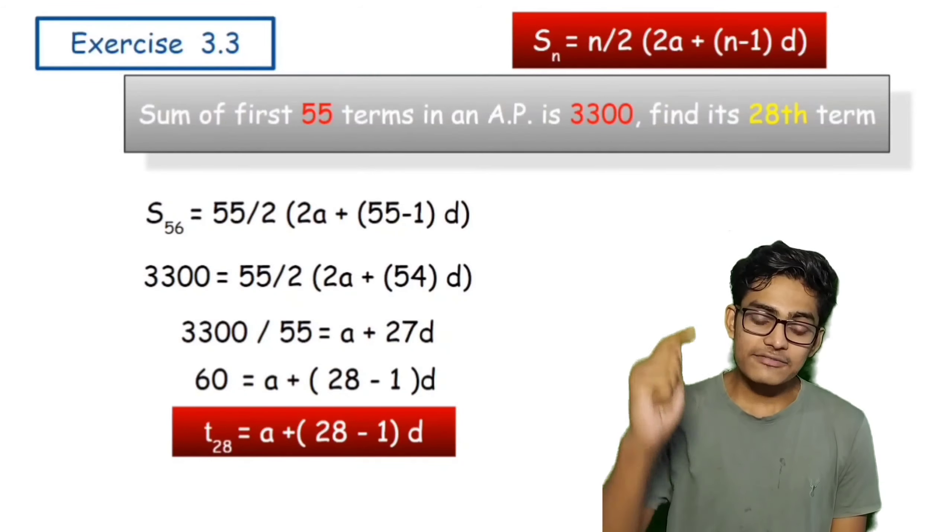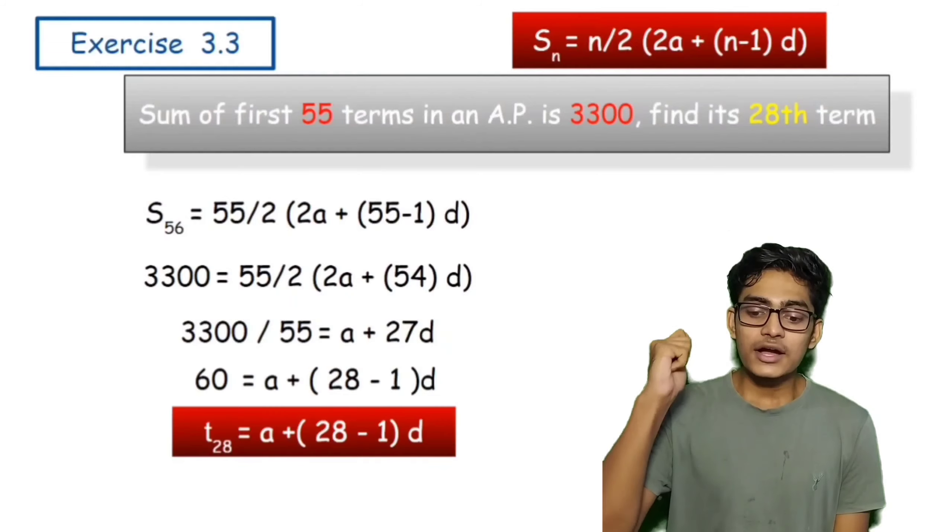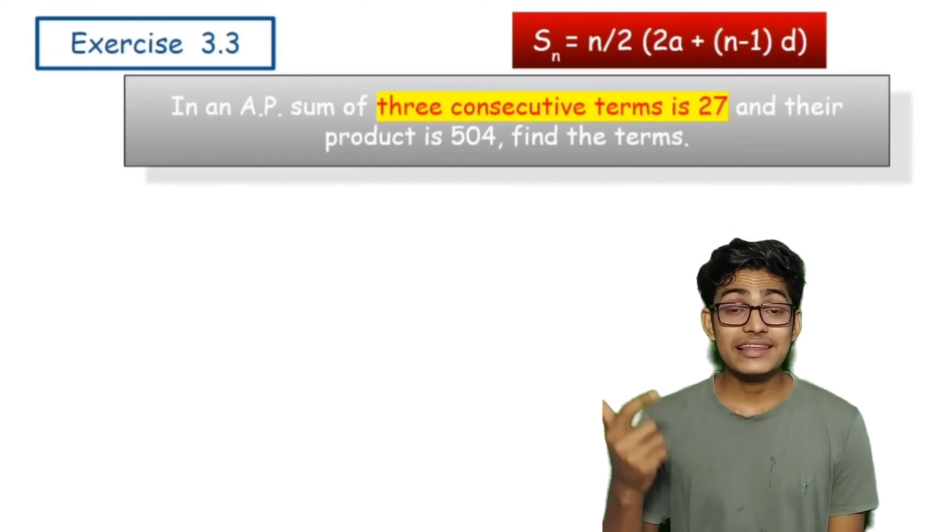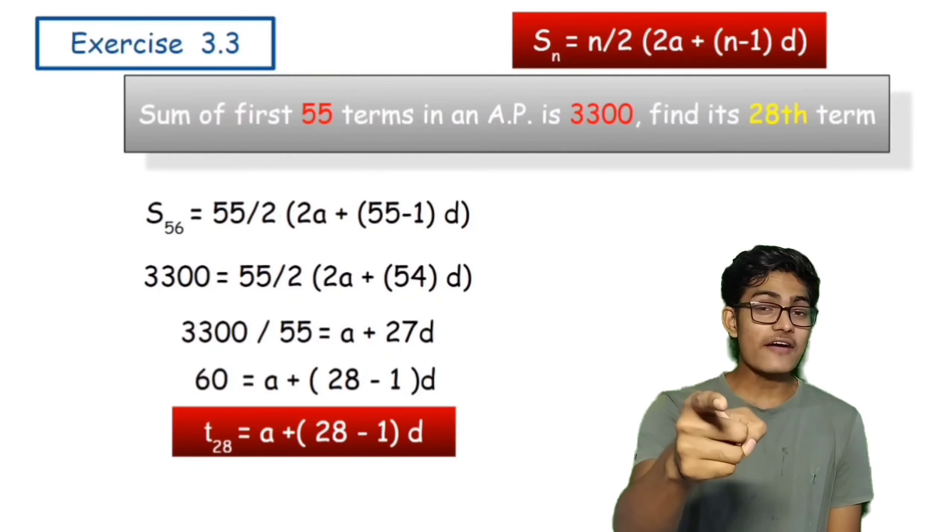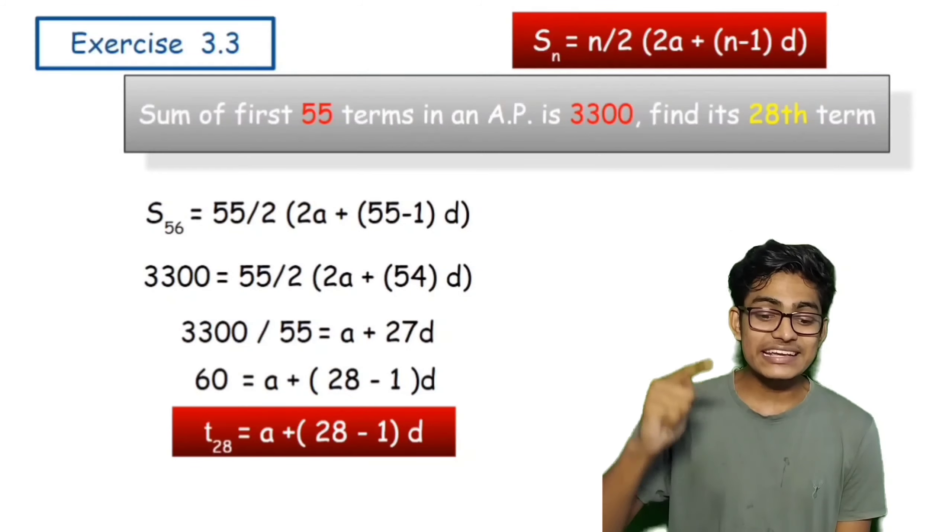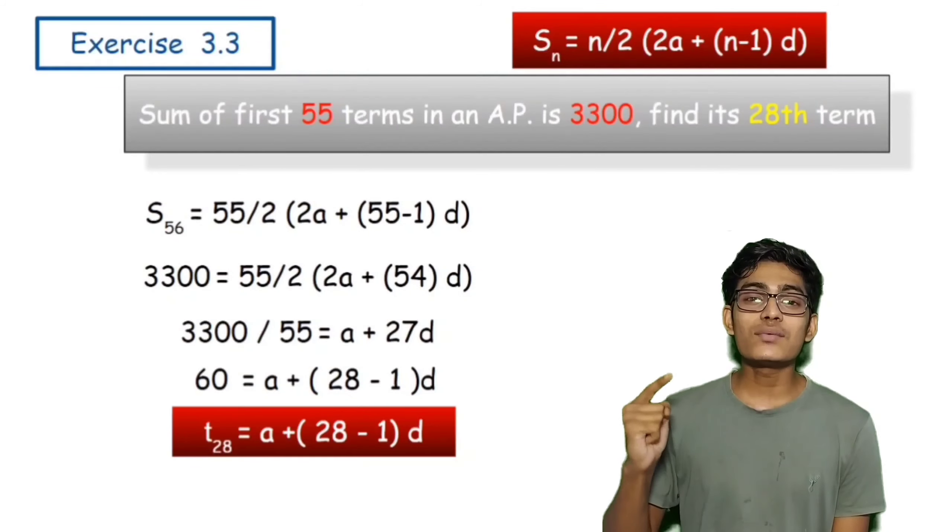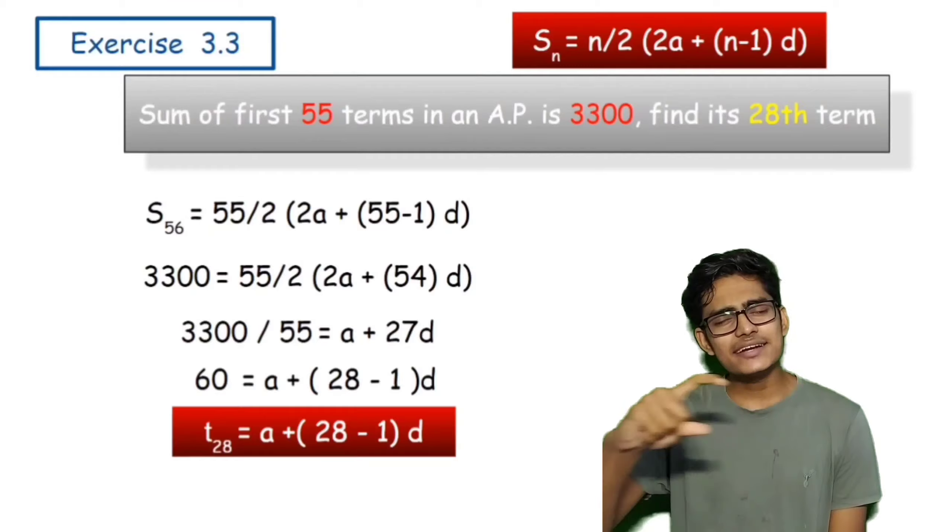So our final answer will be that term 28 ka value, so you have to write it - that term 28 ka value is equals to 60. Just write it in the form of a statement, okay?